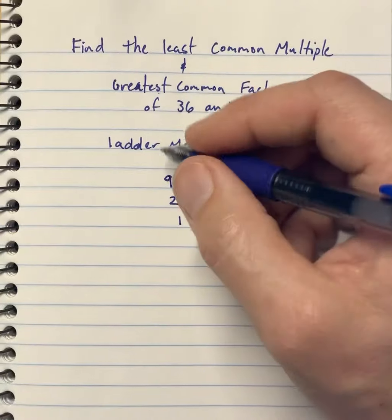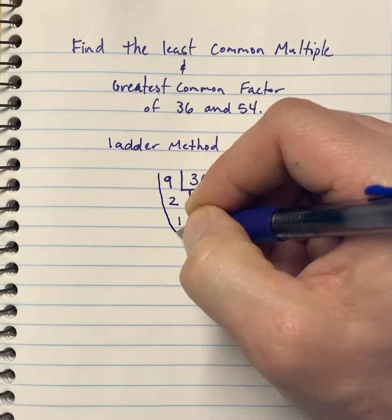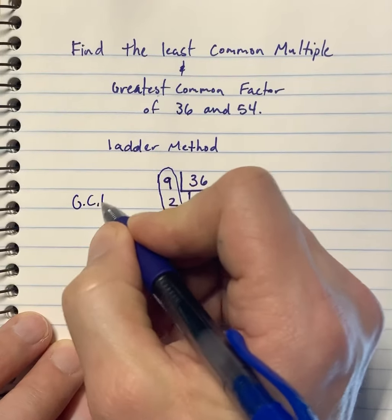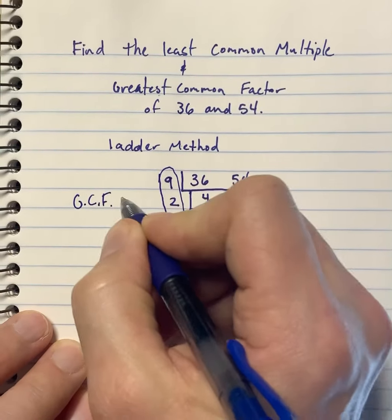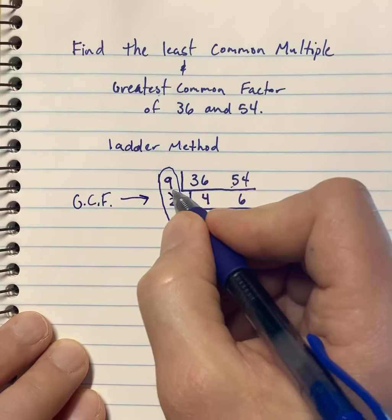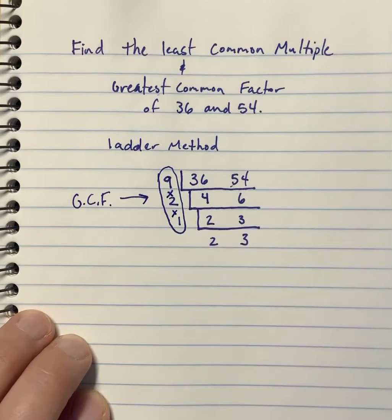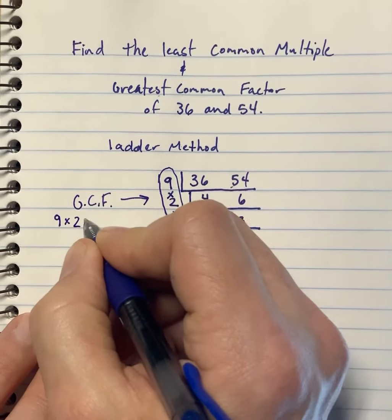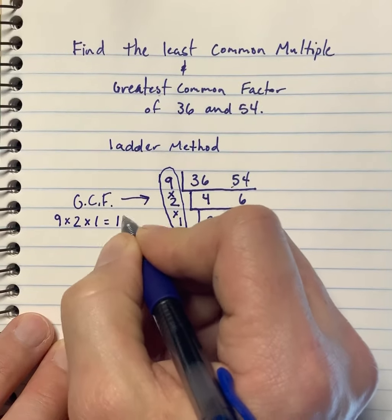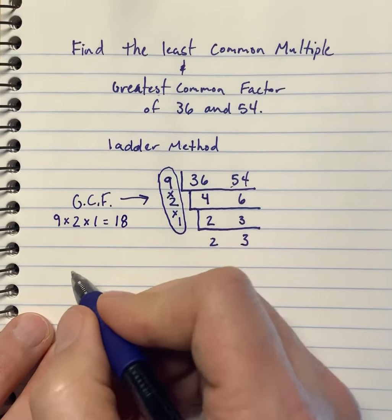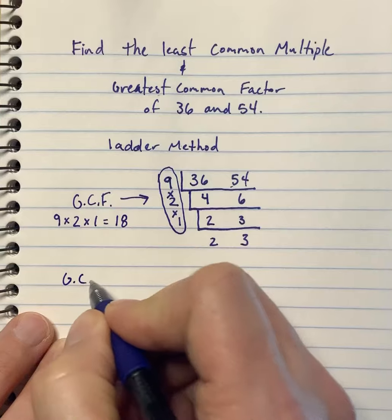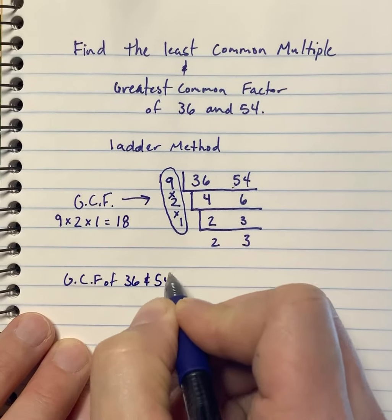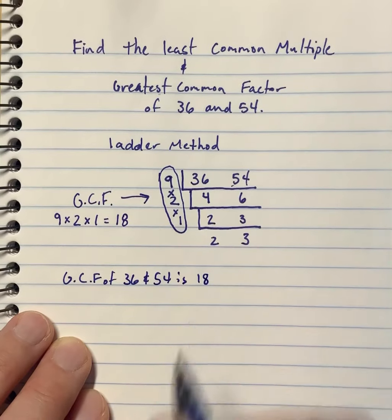The greatest common factor is going to be all the factors on the left-hand side. I'm going to label this GCF and point an arrow to these numbers. You multiply all the numbers on the left together: 9 times 2 is 18, times 1 stays 18. So the GCF of 36 and 54 is 18.